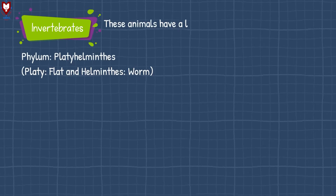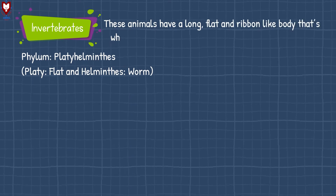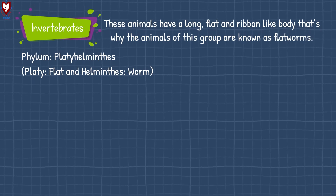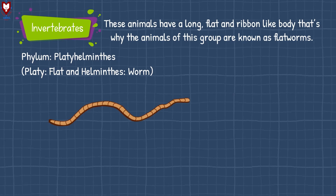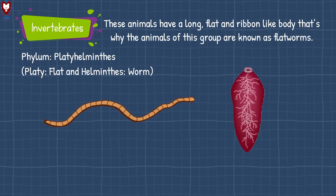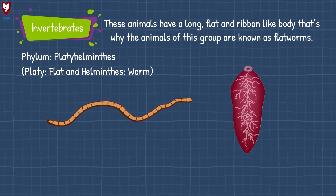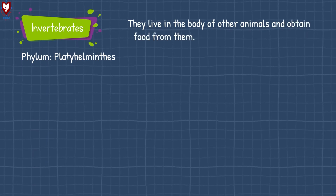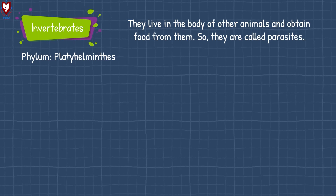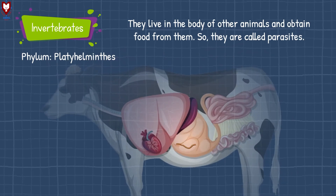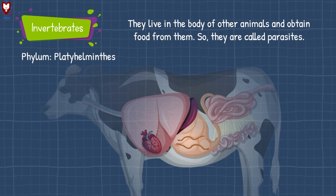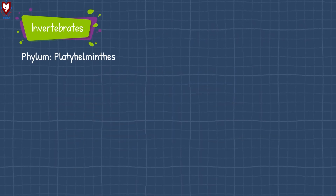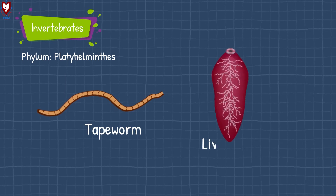These animals have a long, flat, and ribbon-like body. That is why the animals of this group are known as flatworms. They live in the body of other animals and obtain food from them, so they are called parasites. Examples of phylum Platyhelminthes parasites are tapeworm and liver fluke.